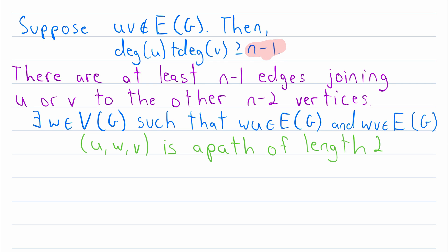Thus, there are at least n minus 1 edges that join U or V to the other n minus 2 vertices that aren't U or V. Since n minus 2 is less than n minus 1, this means there's got to be at least one vertex that's adjacent to both U and V. And if we call that vertex W, we see that U, W, V is a path of length 2.